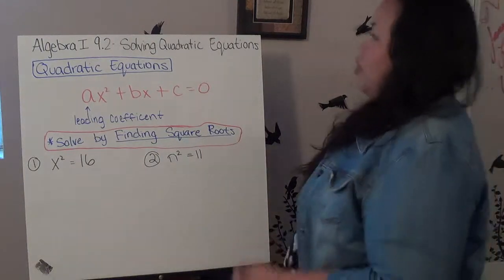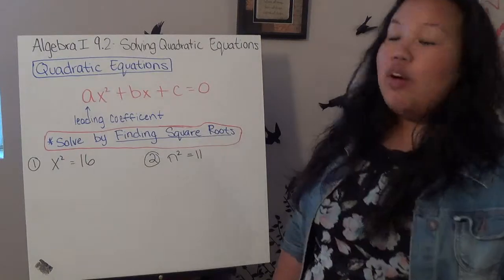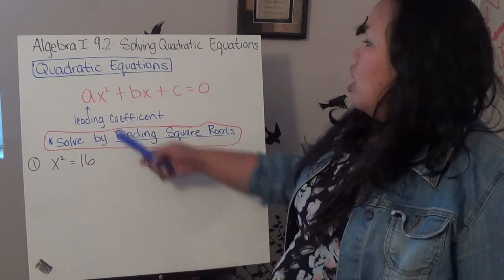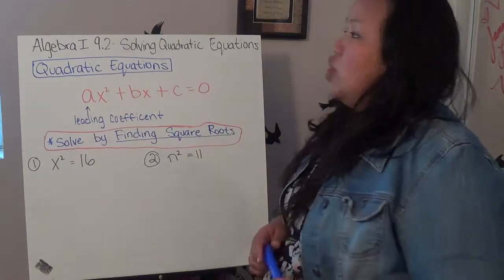In Algebra 1, Section 9.2, we're dealing with solving quadratic equations. Now, the quadratic equations are ax squared plus bx plus c equals 0.